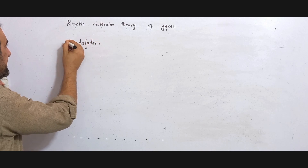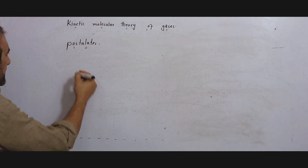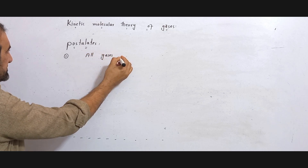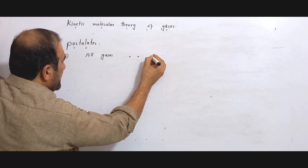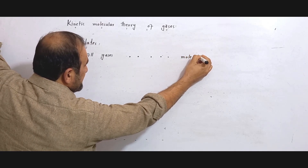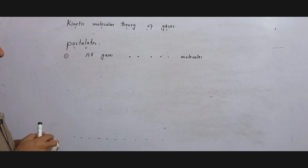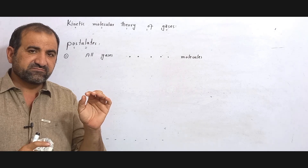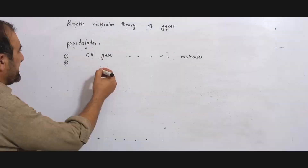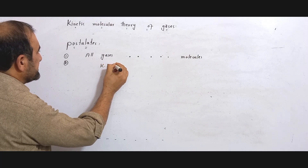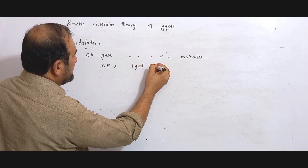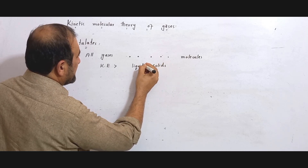According to this theory, all gases are made up of small particles which are called molecules. That is postulate number one: all gases are made up of small particles called molecules.